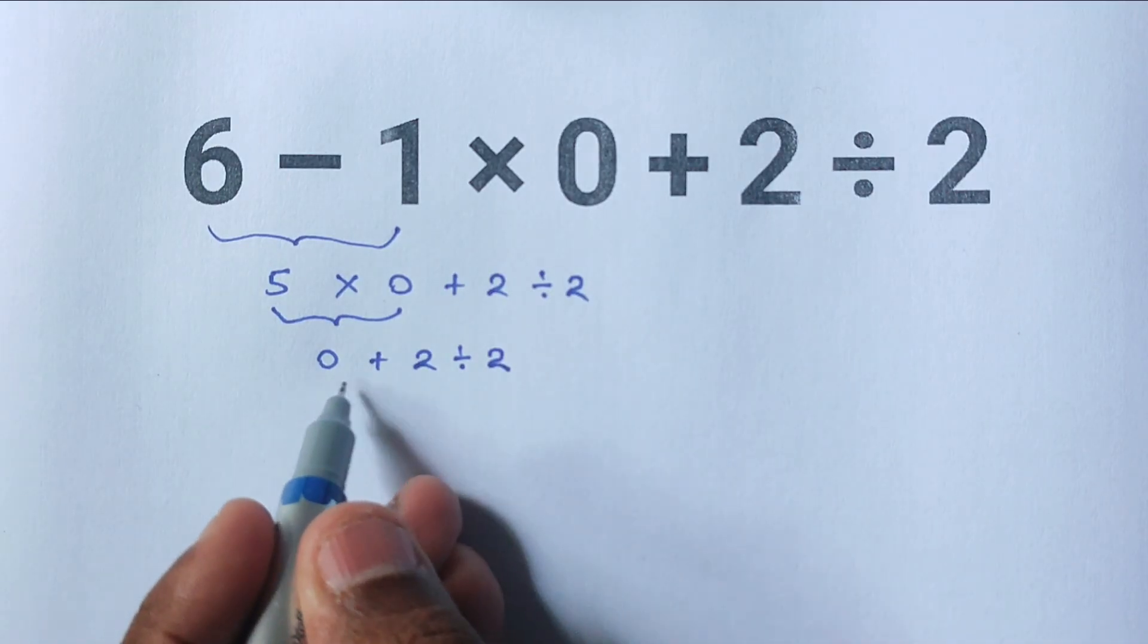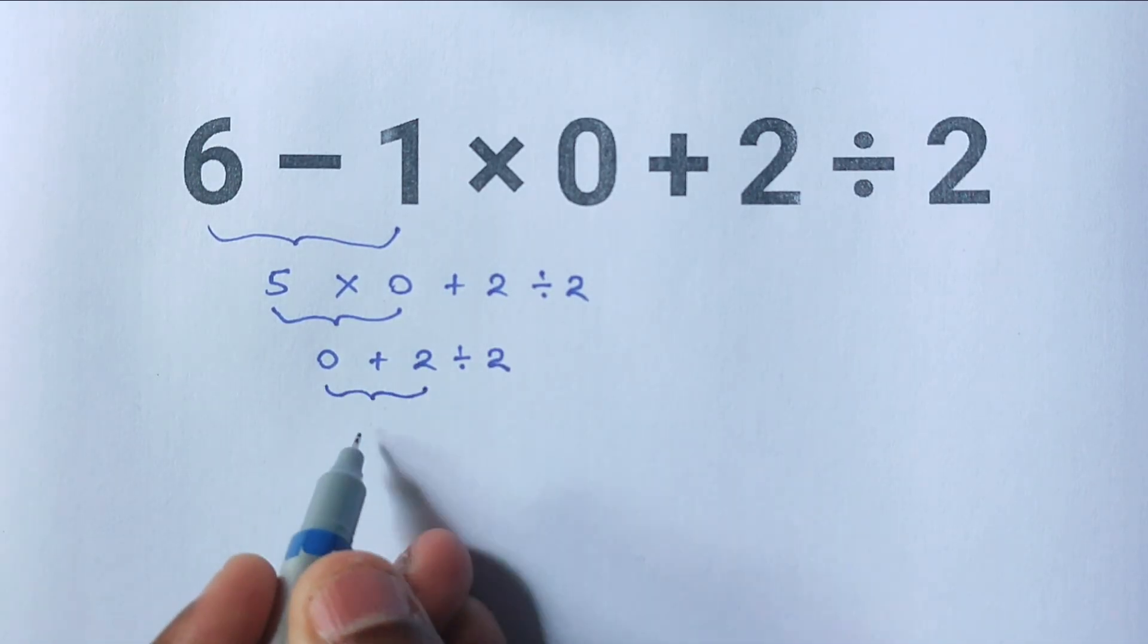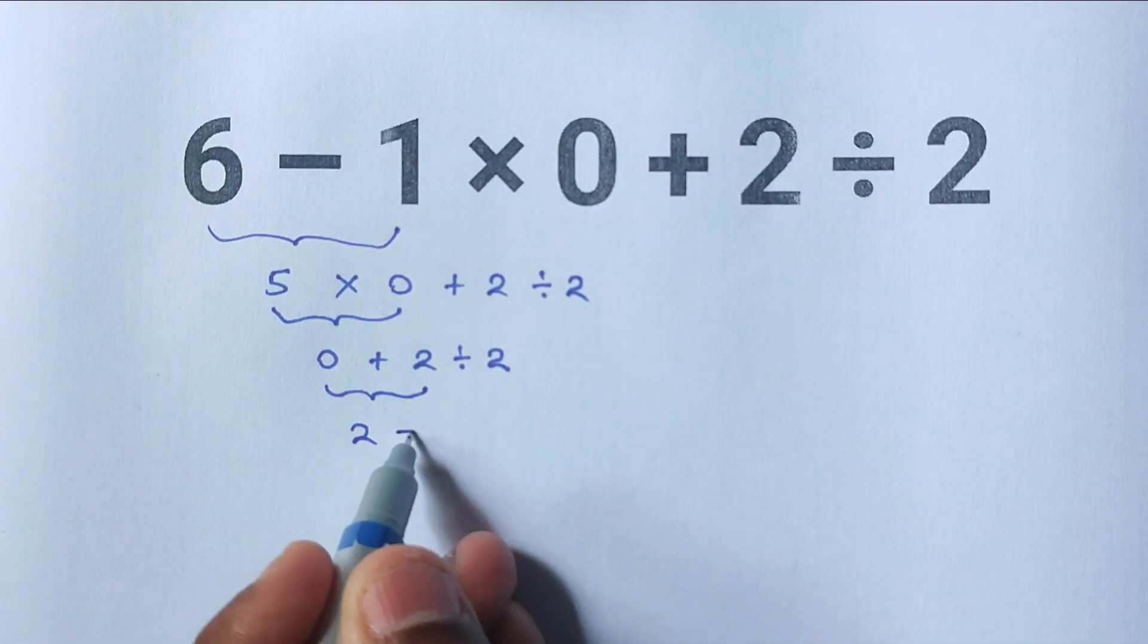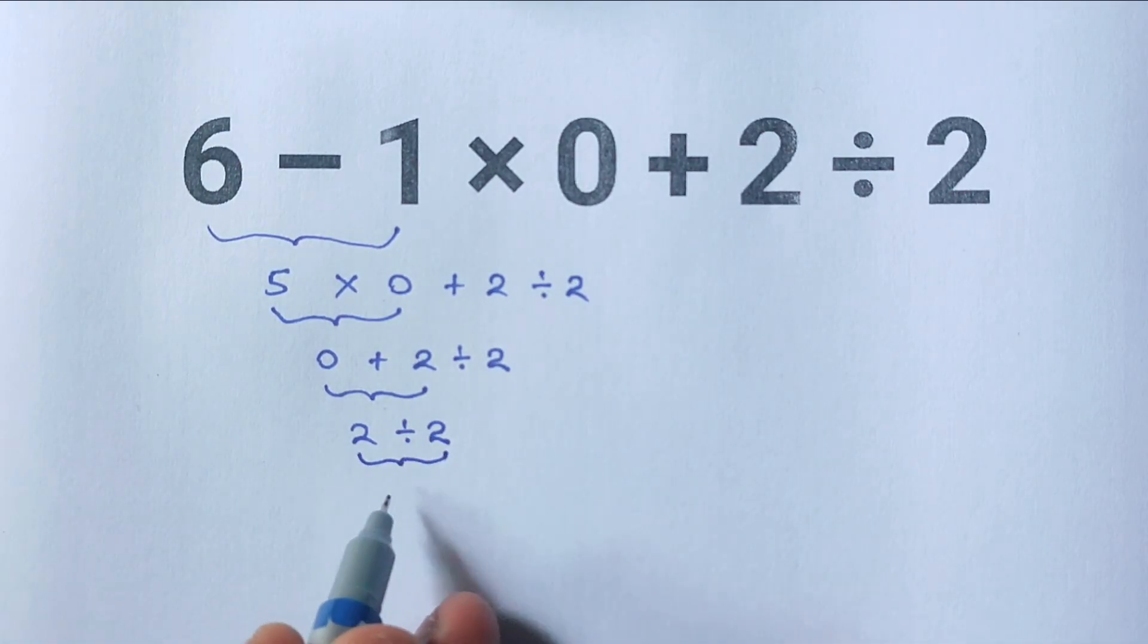If they go left to right from here, they do 0 plus 2, which gives 2. Now the expression is 2 divided by 2. Finally, 2 divided by 2 equals 1. So they end up with an answer of 1, but that's incorrect.